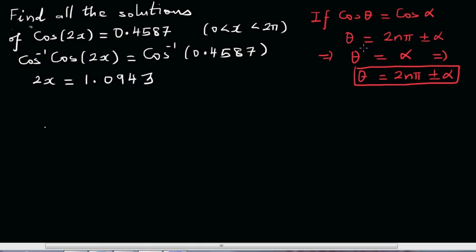Let's rewrite this. If θ equals α, this implies θ is 2nπ plus or minus α. You can compare this with θ with 2x and α with this. I can say 2x equals 2nπ plus or minus 1.0943.